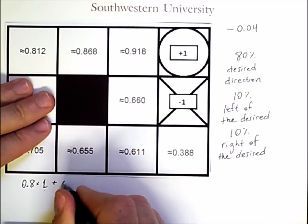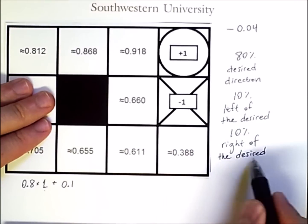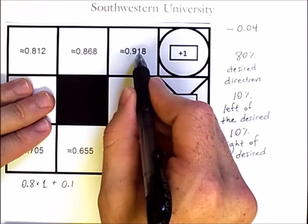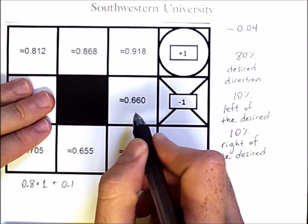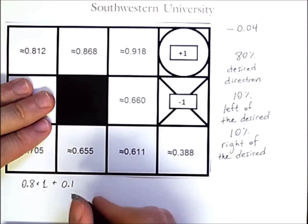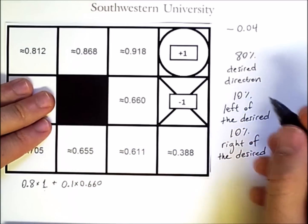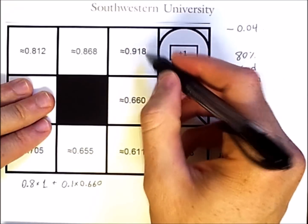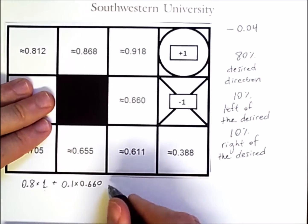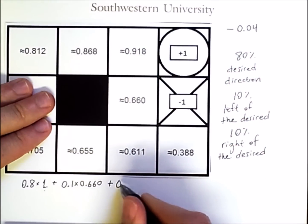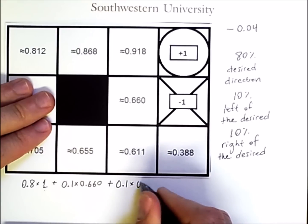There is a 10% chance of going to the right of the desired action, which the right of going in this direction would be down. And so the reward in that state is 0.660. And there's a 10% chance of going to the left of the desired state, which would just bounce us off this wall and put us back where we started. So there's a 10% chance of winding up where we started, and that state has a reward of 0.918.